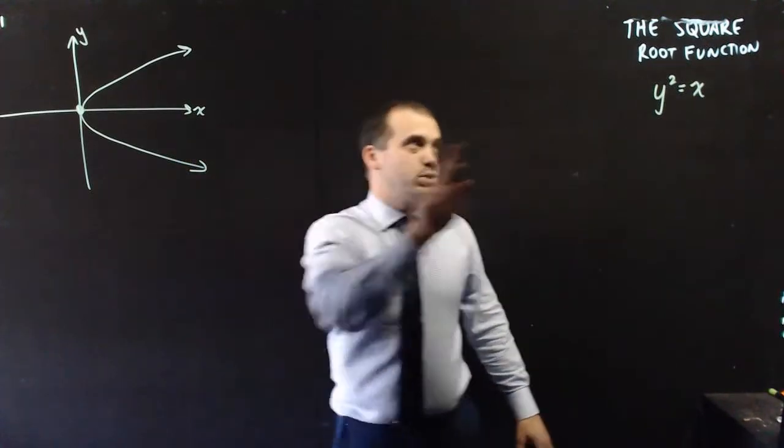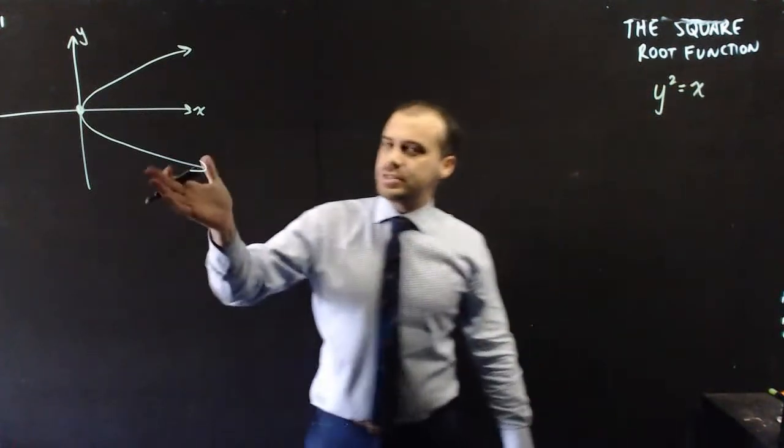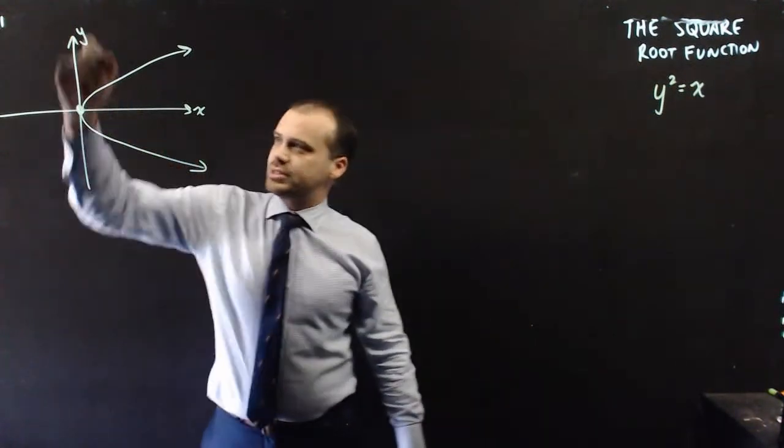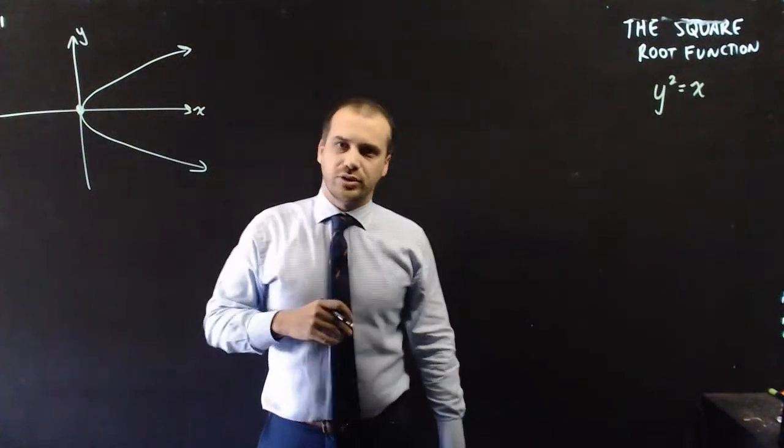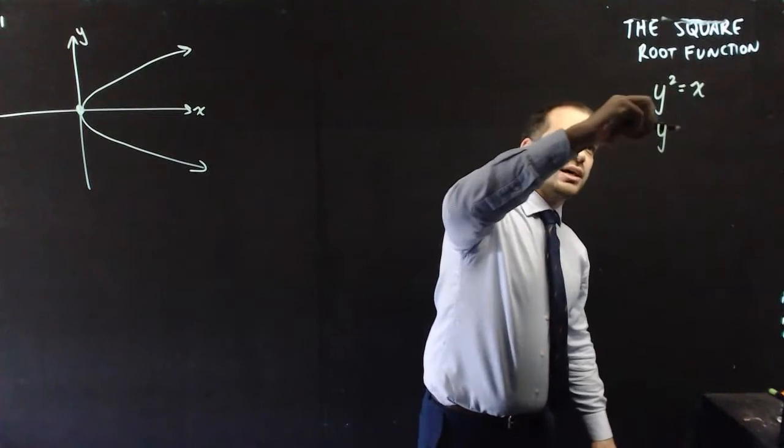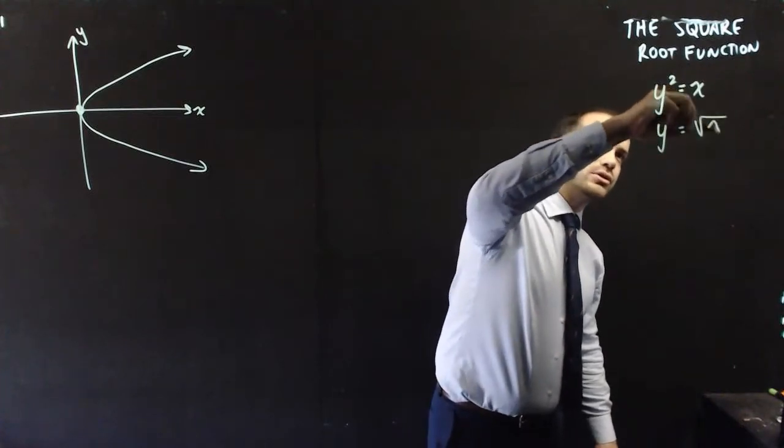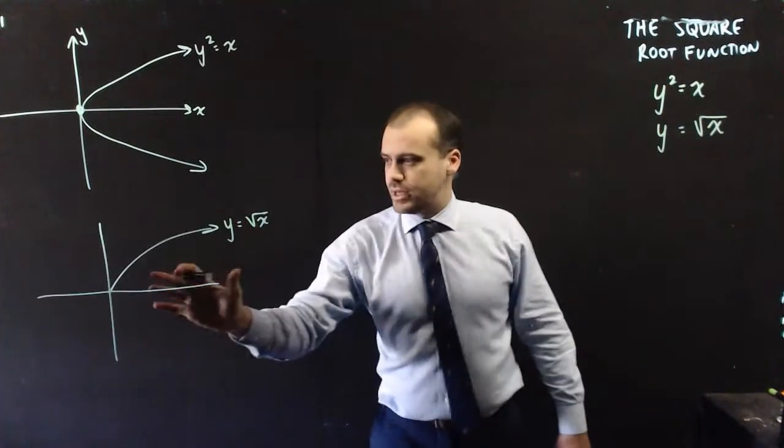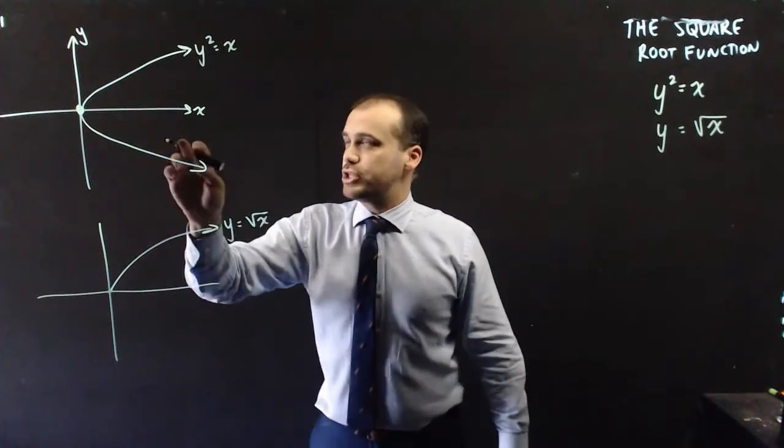Now, it's important to note that I'm talking about the square root function, but this is clearly not a function because it doesn't pass the vertical line test. So let me draw it a little bit differently. Let's say y equals root x.